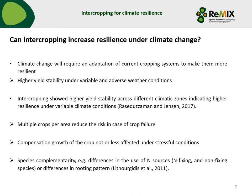The main question is: can intercropping increase resilience under climate change? In general, climate change will require an adaptation of current cropping systems to make them more resilient. I would define resilience as a higher yield stability under variable and adverse weather conditions. Looking at the literature, intercropping shows a higher yield stability across different climatic zones, which can indicate a higher resilience. The advantage of intercropping is that we have multiple crops per area, which can reduce the risk in case of crop failure of one crop, and there is the possibility of compensation growth of the less affected crop.